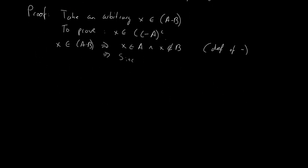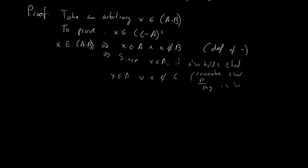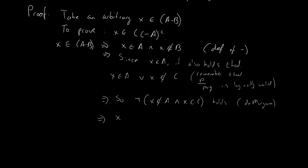But if x is in A, then that must mean that x is in A or x is not in C. Remember that from just P, we may logically conclude — it is logically valid to conclude — that P or Q holds. So that means x is in A or x is not in C. Applying De Morgan's, not: x not in A and x in C. That must mean that x is in the complement of C minus A, by the definition of the complement.